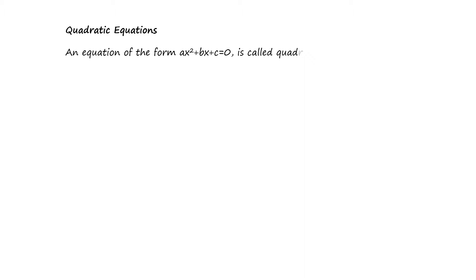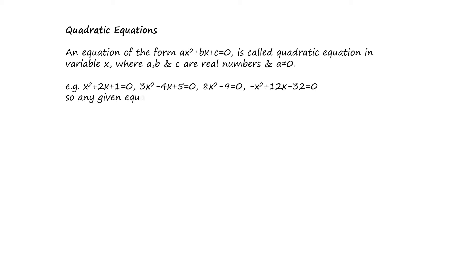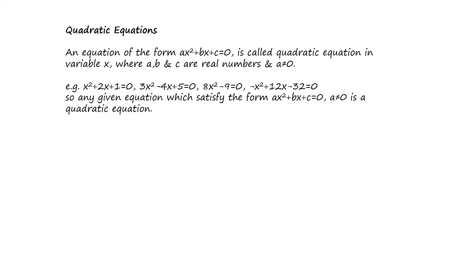What is a quadratic equation? An equation of the form ax² + bx + c = 0 is called a quadratic equation in variable x, where a, b, c are real numbers and a ≠ 0. For example: x² + 2x + 1 = 0; 3x² - 4x + 5 = 0; 8x² - 9 = 0; and -x² + 12x - 32 = 0. All of these belong to the quadratic equation category.